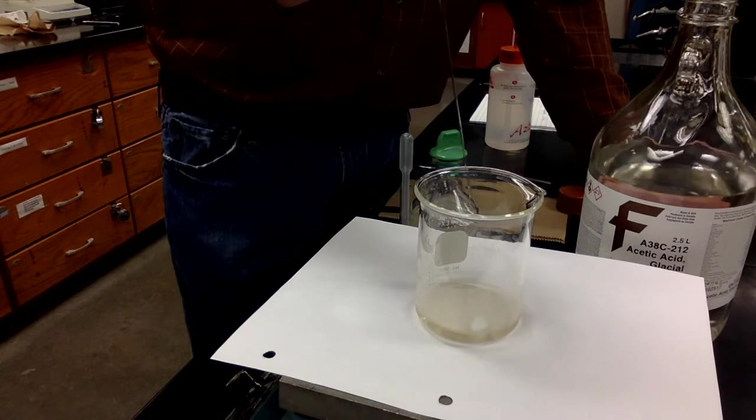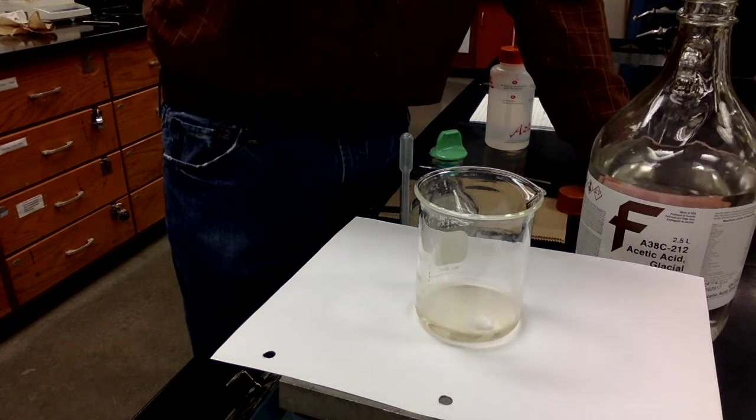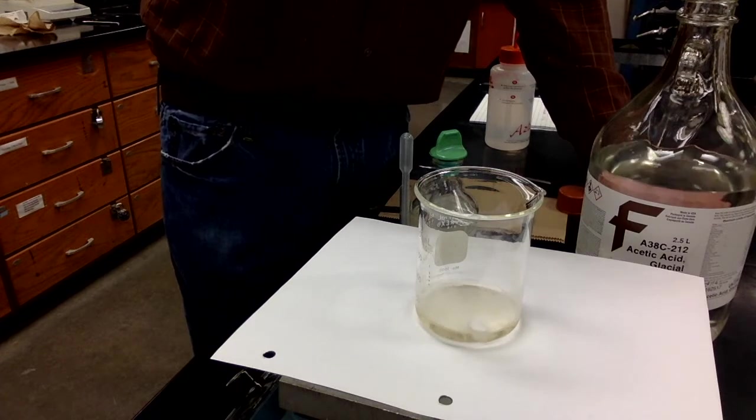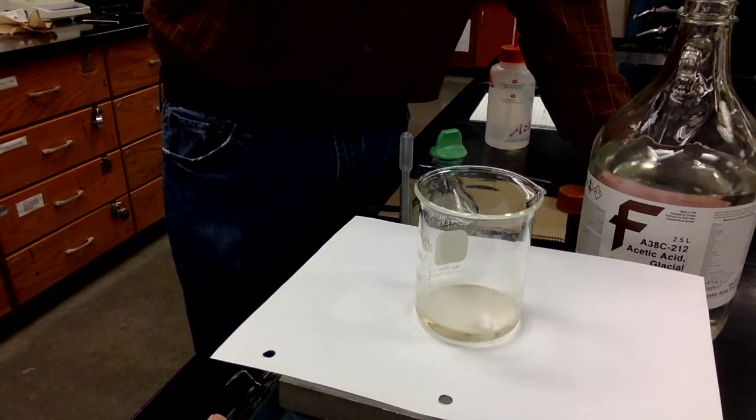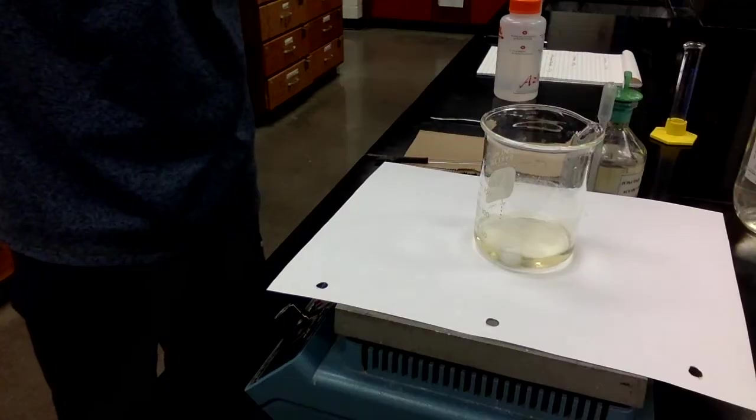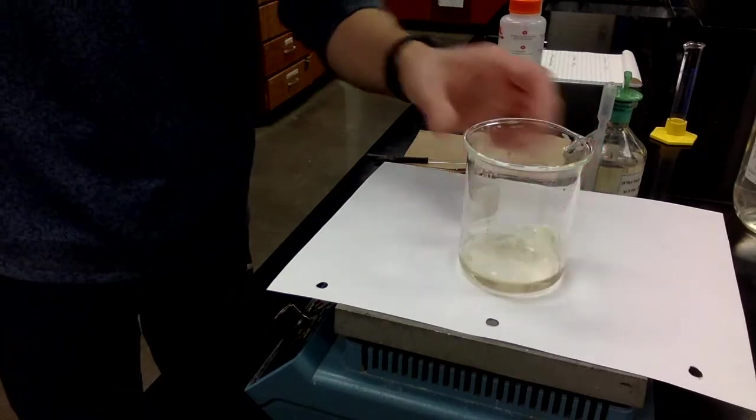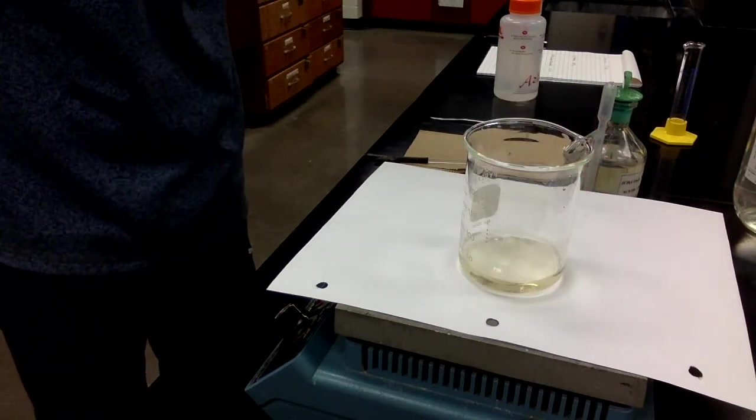You can see it there, the vigorous bubbling taking place on the initial addition of the acetic acid. That's the quenching of the excess sodium borohydride. We've now added both of the reagents, so you can see what it looks like, and we're about to take it over to the steam bath.